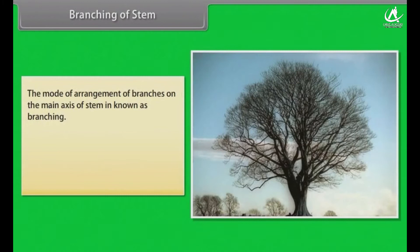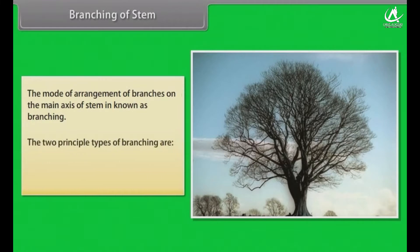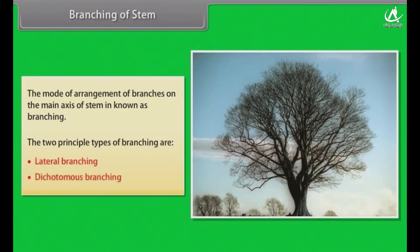The mode of arrangement of branches on the main axis of stem is known as branching. The two principal types of branching are lateral branching and dichotomous branching.